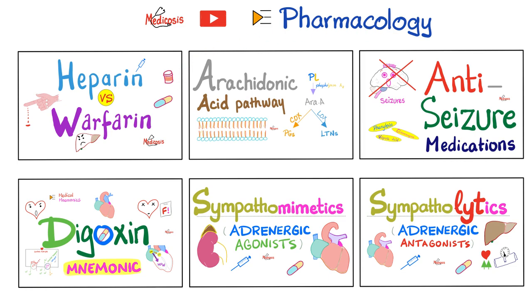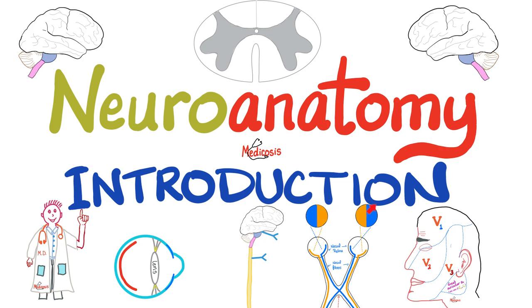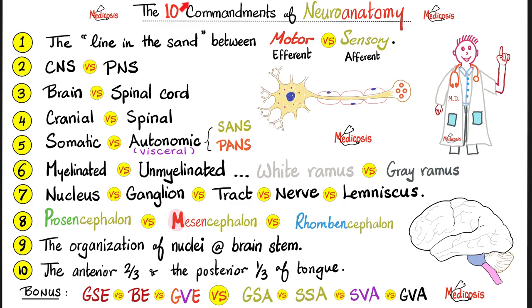Please watch the videos in this playlist in order for maximum understanding and retention. This playlist has more than 300 videos, from A to Z, from albuterol to zafirlukast. Let's go back to basics. If you've watched my neuroanatomy introduction video, we talked about the 10 commandments of neuroanatomy. In commandment number five: thou shalt understand the distinction between somatic and autonomic. Somatic is voluntary. Autonomic is involuntary, synonymous with visceral, synonymous with splanchnic — they all mean involuntary.